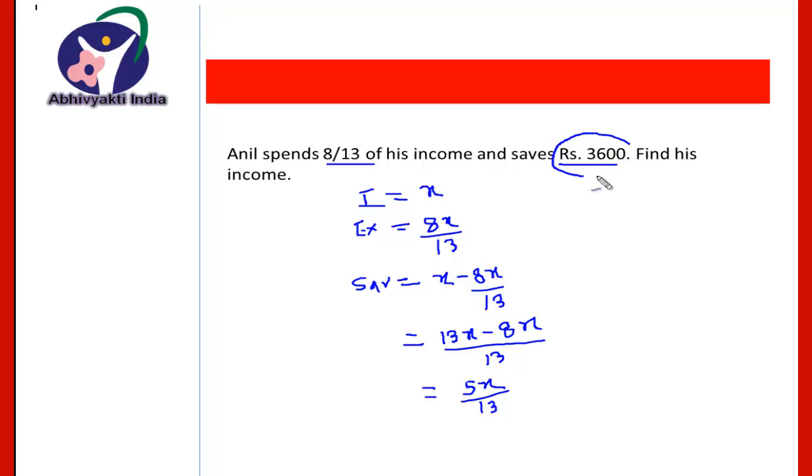But the saving is given as Rs. 3600, and therefore we can equate 5x by 13 is equal to 3,600. And therefore x will be equal to 3,600 multiplied by 13 divided by 5, and therefore x is equal to 9,360. So his income is Rs. 9,360. This is the general approach that we use always to solve such type of question.